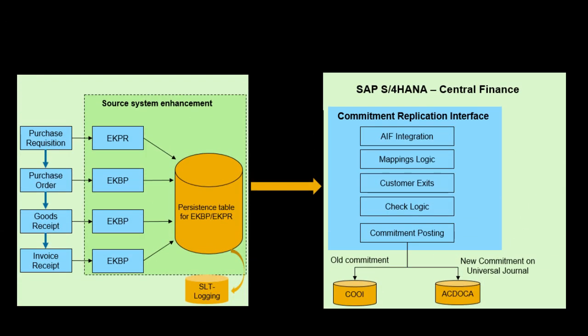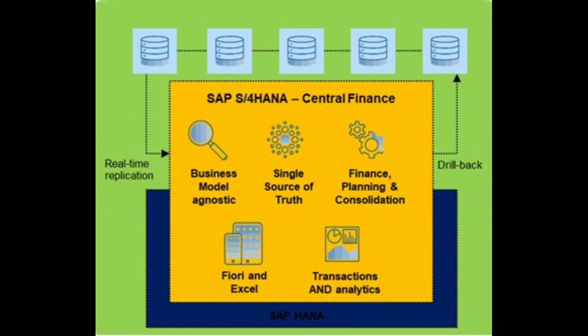Once FICO documents are stored in the database, database triggers are written into log tables in the source system. SAP SLT can collect data from the posted documents in the source system in real-time and feed it into the corresponding interfaces that Central Finance offers. The replication of CO secondary posting documents relies on the table COEP as a header table and its subtables.